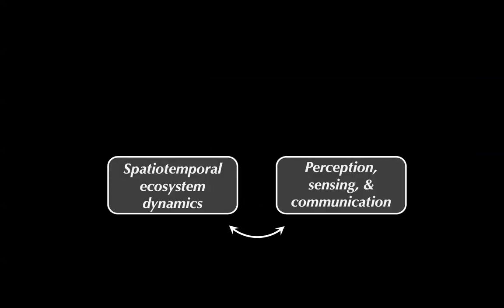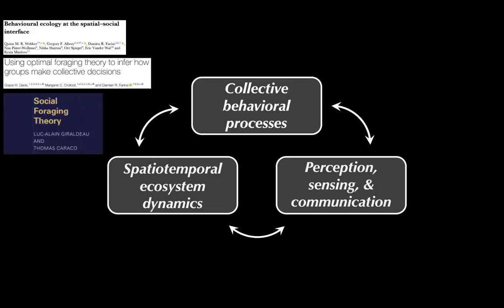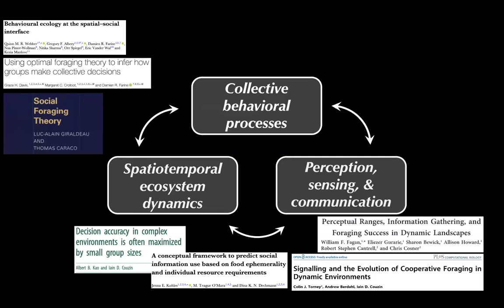If we zoom back out and think about spatiotemporal ecosystem dynamics and how they relate to animals' perception, sensing, and communication, there's also a clear connection to collective behavioral processes. There's a really robust literature on the connections between these three different topics in recent years. I'm throwing a bunch of references up here.